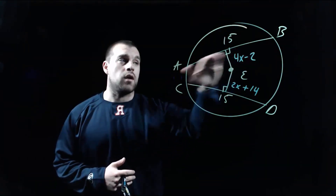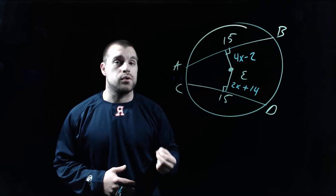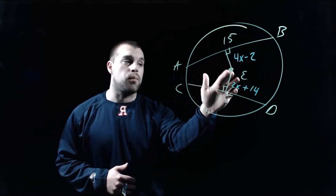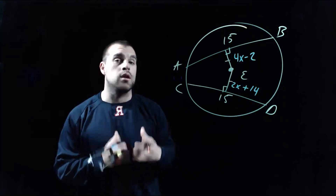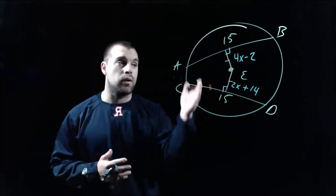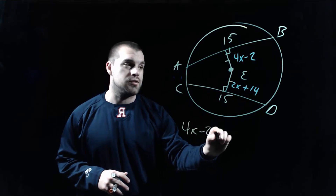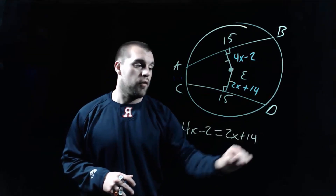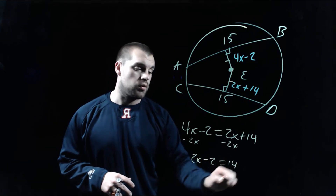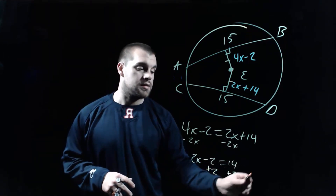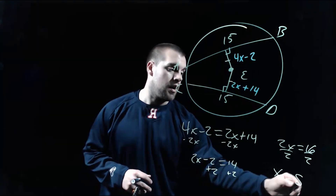In this last example, we've got chords AB and CD, each of length 15, so those chords are congruent. Because they're congruent, the distance from each chord to the center point must also be congruent. We're given algebraic expressions for those distances, so we set them equal: 4x − 2 = 2x + 14. Subtracting 2x gives 2x − 2 = 14; adding 2 gives 2x = 16; dividing by 2 gives x = 8.